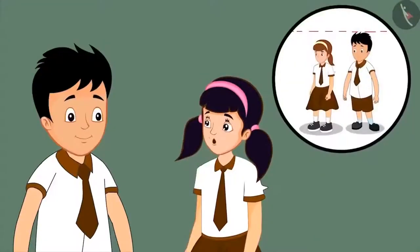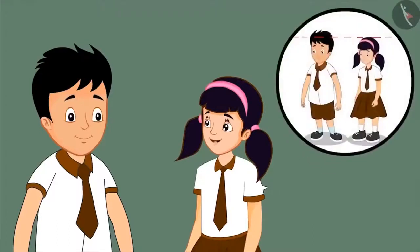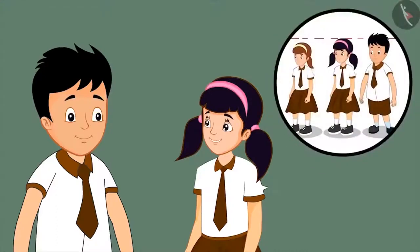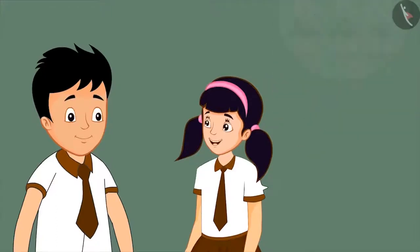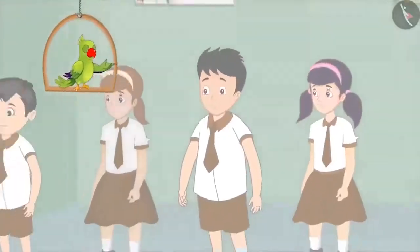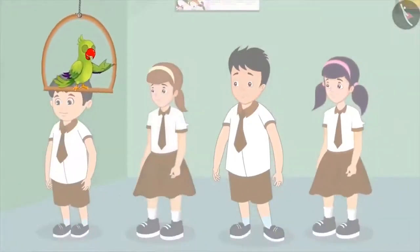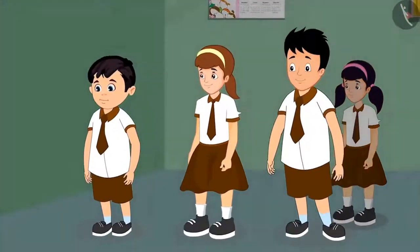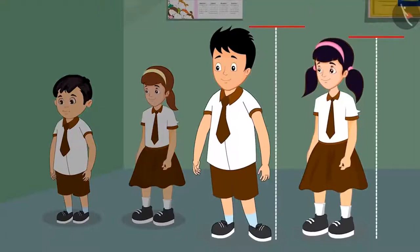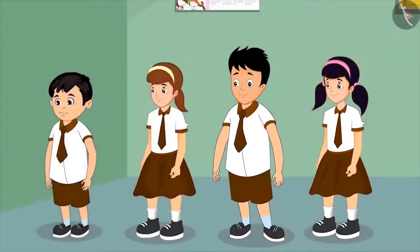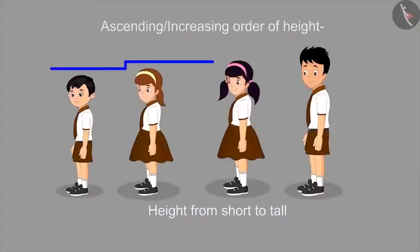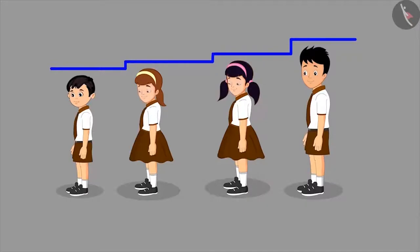Aarti makes Sonu realize his mistake: 'Sonu, just now you saw that you are taller than Neha, but you did not see that I am also shorter than you. I am taller than Neha and shorter than you. So I should stand behind Neha but in front of you.' Sonu agrees she is absolutely right. While making the order, Sonu saw that he was taller than the children standing in front, but did not check whether children not yet in line were shorter than him. Finally, Chotu and his three friends stood in the correct increasing order of height, from short to tall.